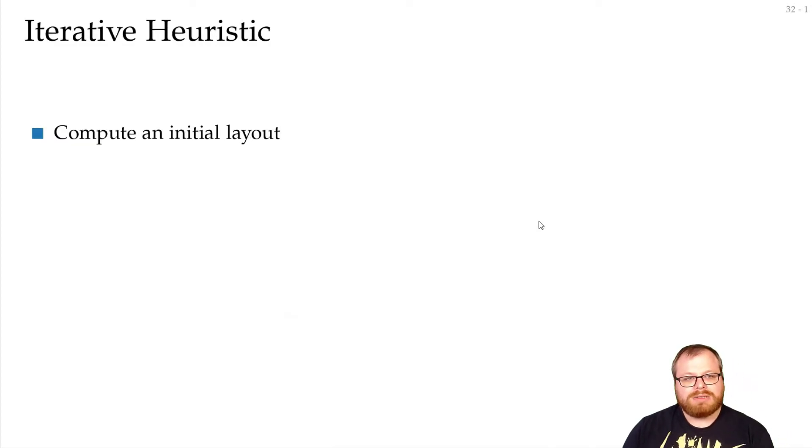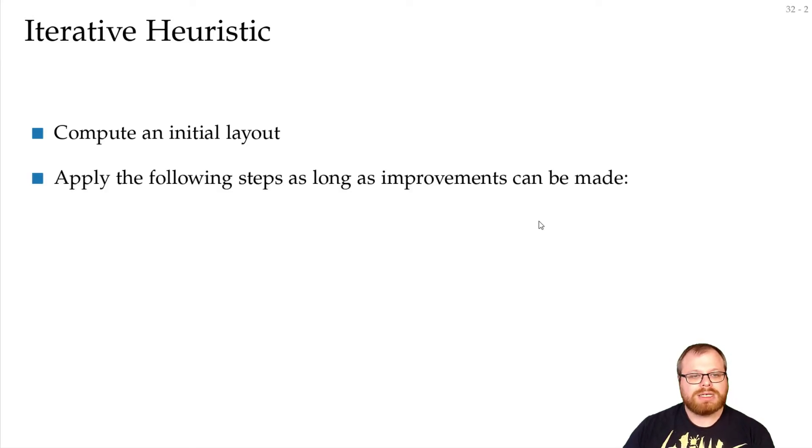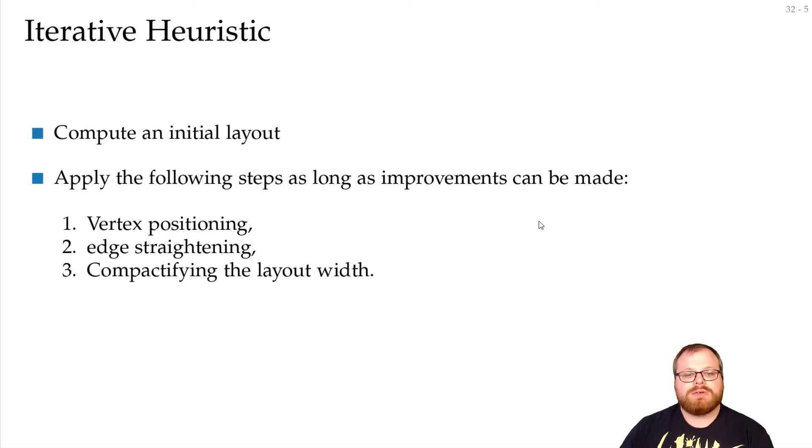On the other hand, we can use a very simple iterative heuristic. We compute some initial layout, and then we apply three steps, as long as we can make improvements. We first position the vertices. Then we try to straighten the edges. So we move the vertices around to make the edges straight. And then we try to compactify the layout width. So we try to compress everything a little bit.